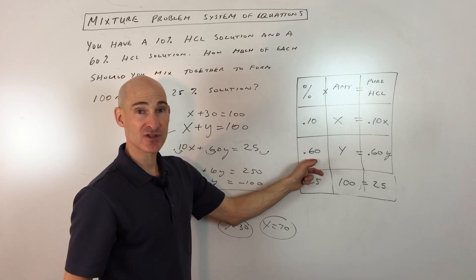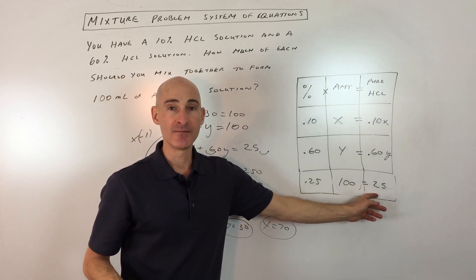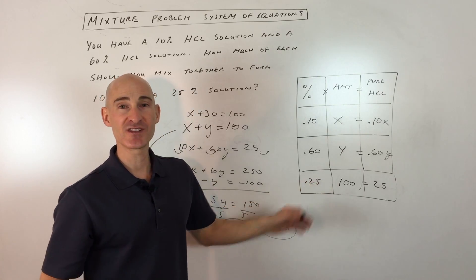Y is my 60% solution. I need 30 milliliters of that. And then if we combine these together, we're going to get 25 milliliters of pure hydrochloric acid, making this a 25% solution.